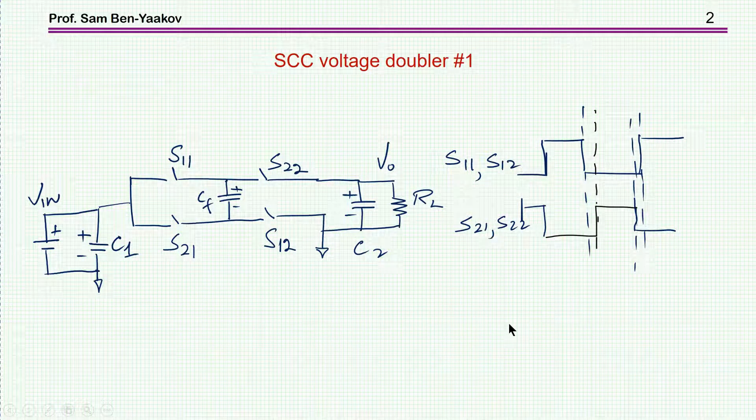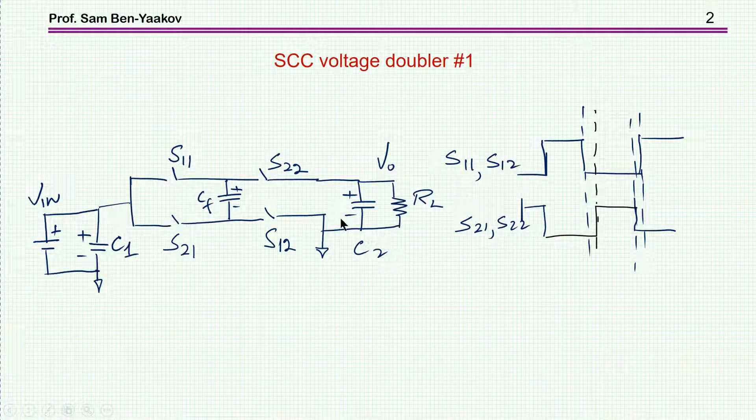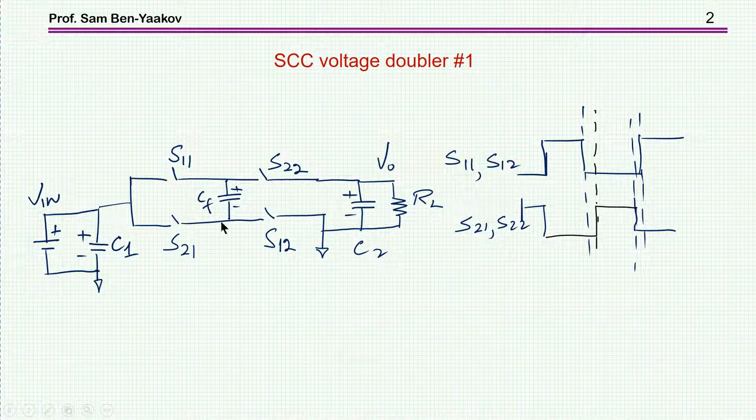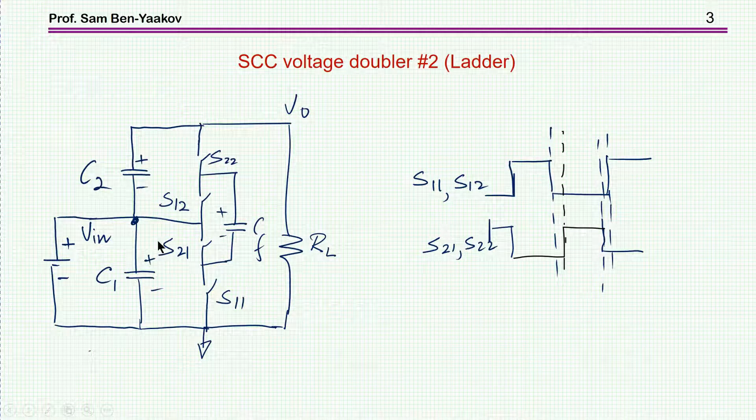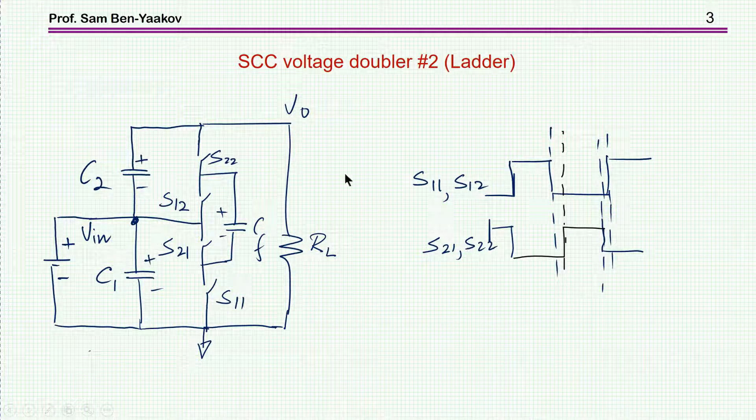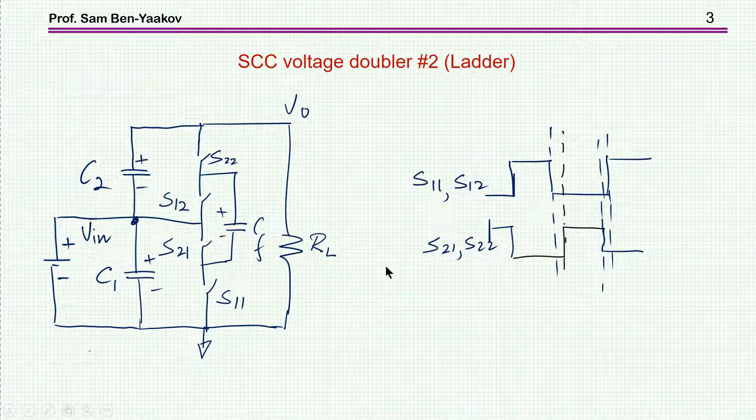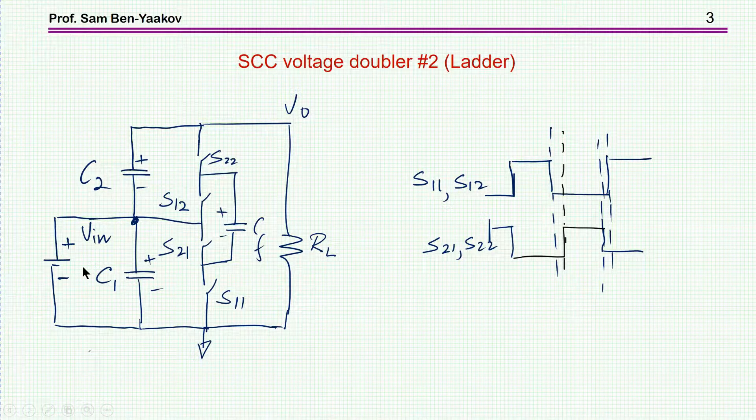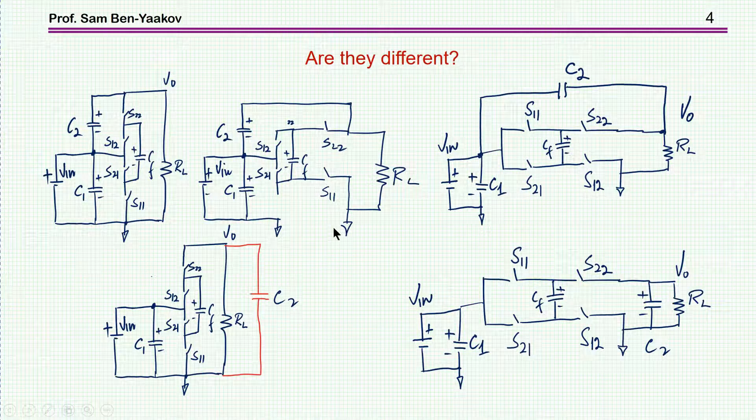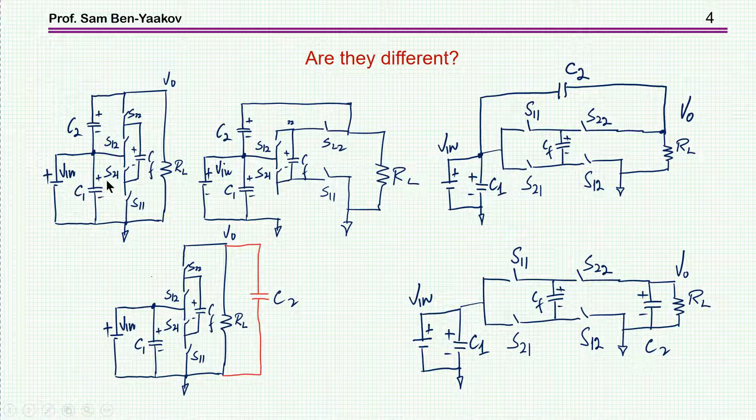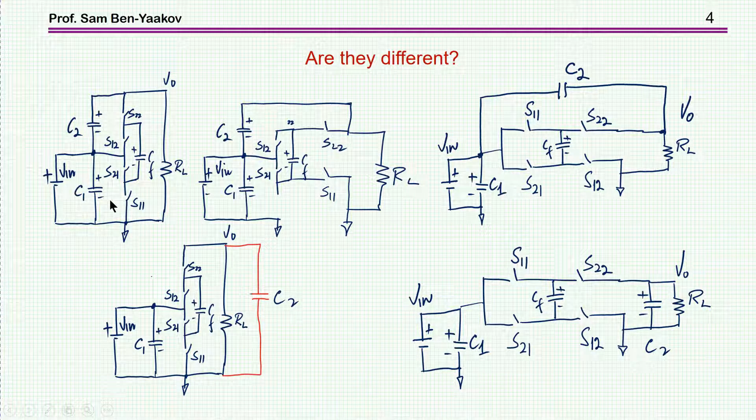In the original video, I've discussed two switched capacitor converters which are doublers. One is in this configuration, which I'll call a doubler, has an input, four switches, an output, and a flying capacitor. There is another configuration, which I'll call the ladder configuration, which has here two capacitors. This is again the input, this is the output. Both of these converters would produce an output voltage at no load, of course, which is twice the input voltage.